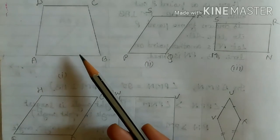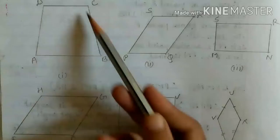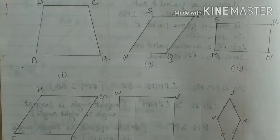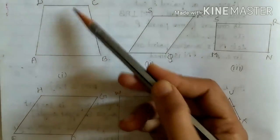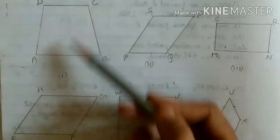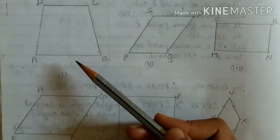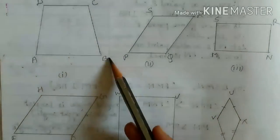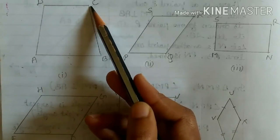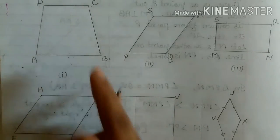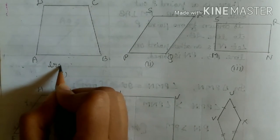So at first you see quadrilateral A, B, C, D. Here you see one pair of opposite sides of this quadrilateral is parallel — AB is parallel to CD. So this type of quadrilateral is called trapezium.